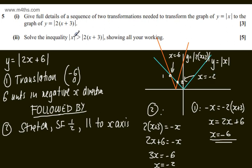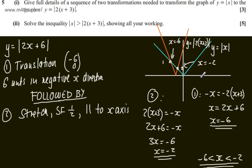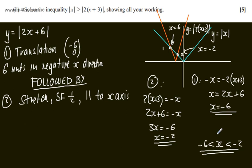Now I ask myself: where is y = |x| above y = |2x + 3|? Looking at the sketch, that occurs between our two critical values — when x is greater than -6 and less than -2. So the solution to the inequality is -6 < x < -2. That's one way of doing it; there are other approaches that give the same set of values.